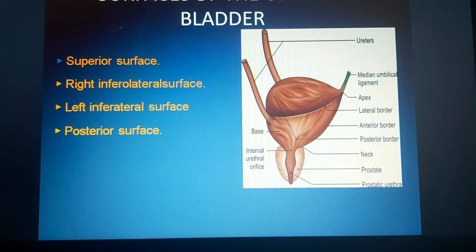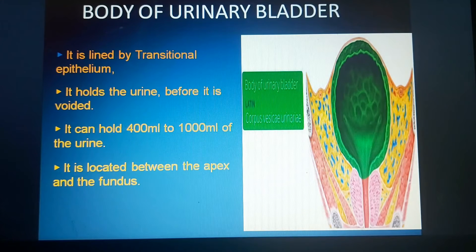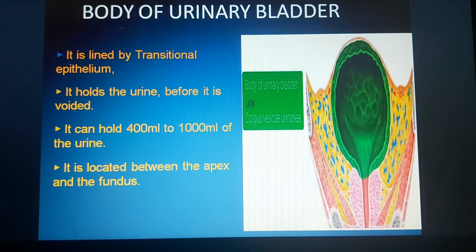The surfaces of the urinary bladder are the superior surface, right and left infero-lateral surfaces, and posterior surface. The body of the urinary bladder is lined by transitional epithelium. It can hold up to 400 ml to 1000 ml of urine and is located between the apex and the fundus.